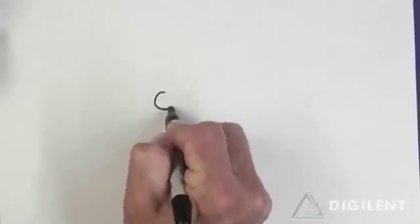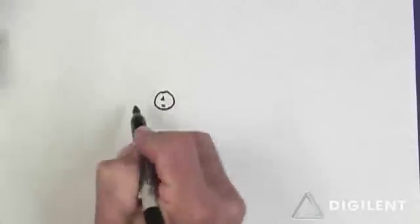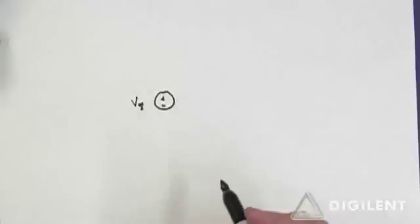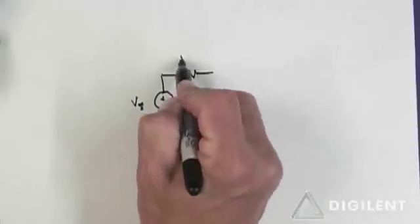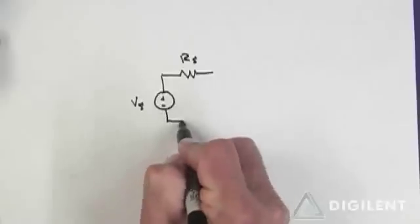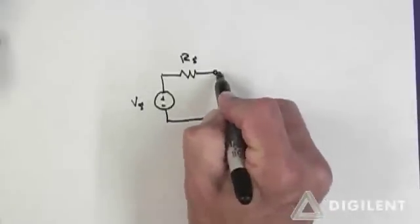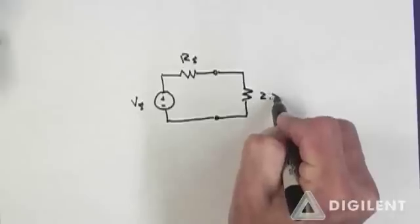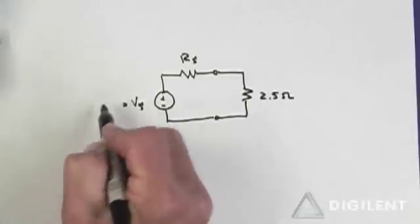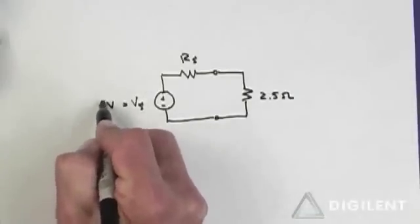Let's analyze this circuit to determine what kind of effect a relatively small load resistance has on the power that can be delivered by the supply. Our non-ideal source is going to look like an ideal voltage source, V sub S, in series with some internal resistance, R sub S. For my demonstration, I'm going to hook this up to an overall resistance of 2.5 ohms. And I'm going to set V sub S equal to 1 volt.